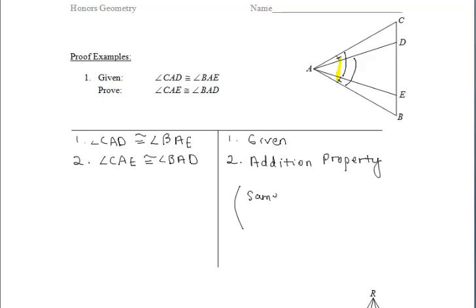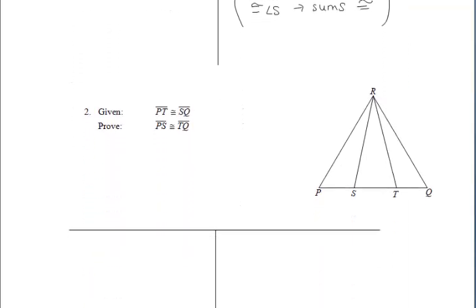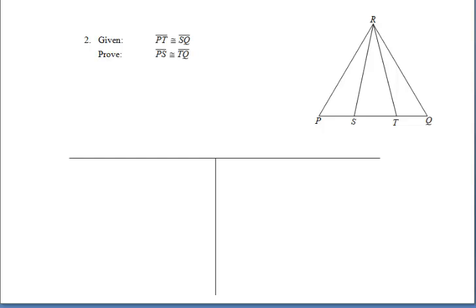Now, let's put into words specifically what that means — you do not have to do this, you can just say addition property. But to clarify, what we did was take the same angle, highlighted in yellow, angle DAE, and added it to already congruent smaller angles. So if we add the same angle to congruent angles, then their sums are congruent.